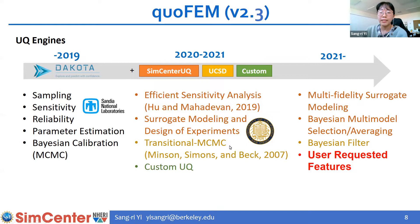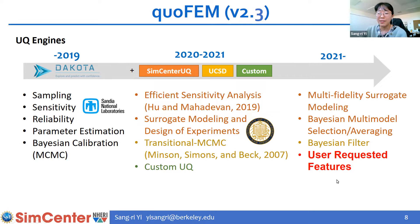We currently have the transitional MCMC algorithm, and we will implement a Bayesian filter algorithm in the near future. We also have a custom UQ engine in case you have your own UQ program and want to use our user interface to interface with FEM programs. Importantly, our future plans can depend on user-requested features. If you have any questions, difficulties, suggestions, or requests, you can go to our SimCenter forum — we really value your opinion and will respond within a few days.